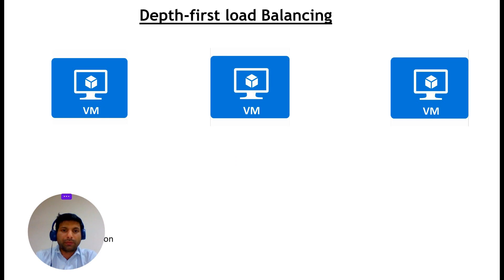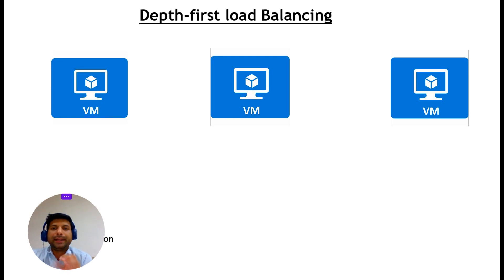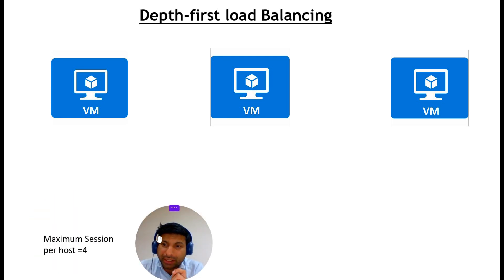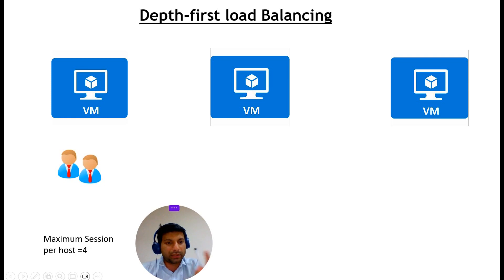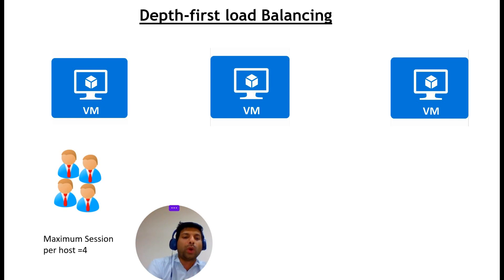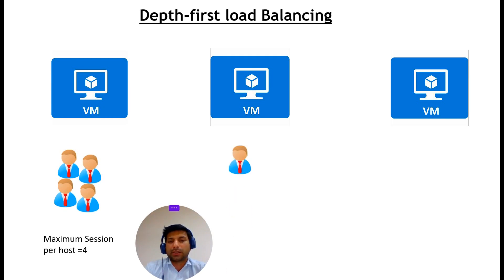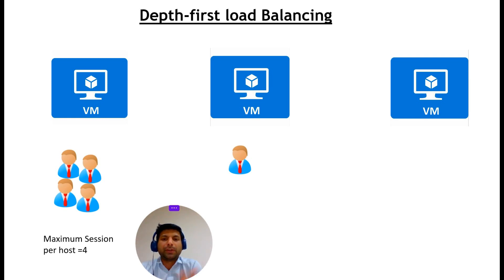The other option for pooled host load balancing is depth-first. Depth-first will fill one session host to the maximum number of connections allowed before directing traffic to the second host. For example, the first, second, third, and fourth users all get the first session host. When the fifth user comes — meaning the maximum sessions for that host, which is four here, has been reached — it moves to the second session host. This is how load balancing is distributed in depth-first load balancing.